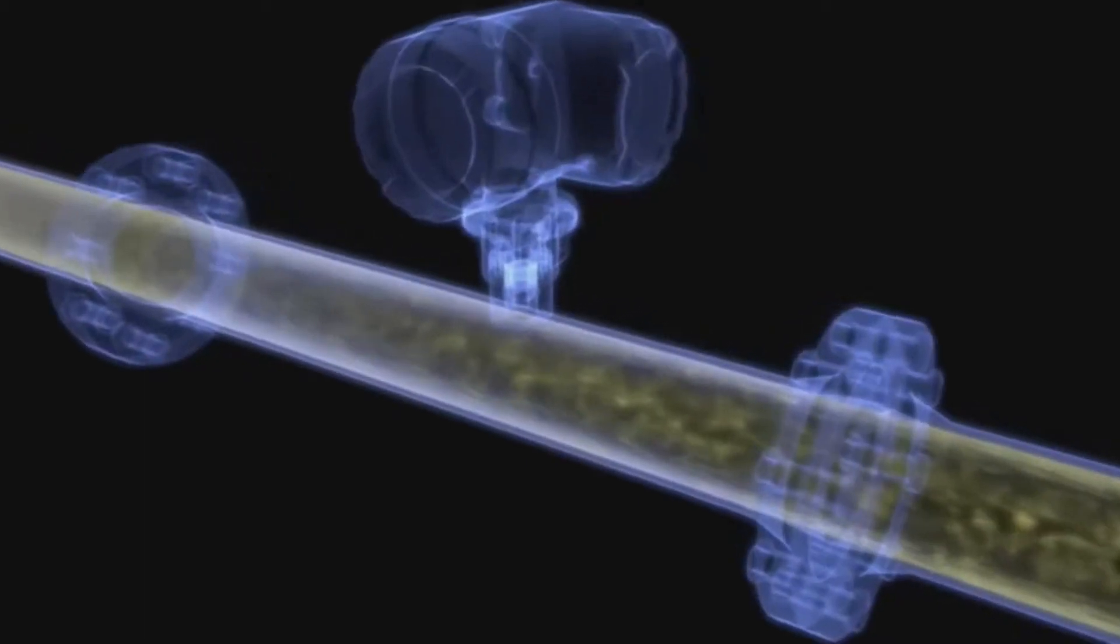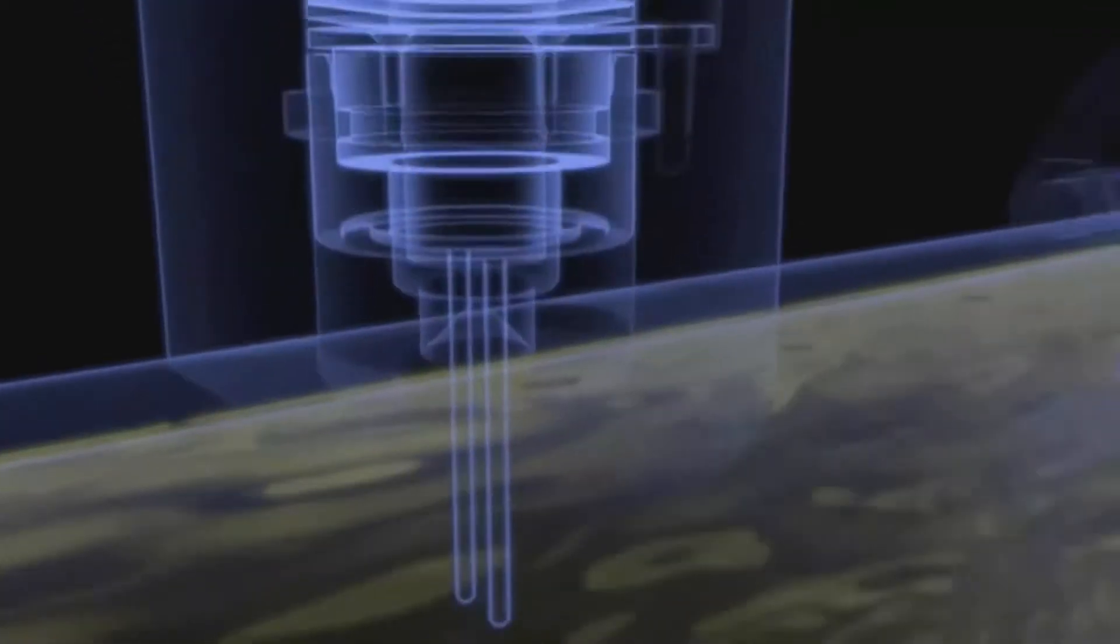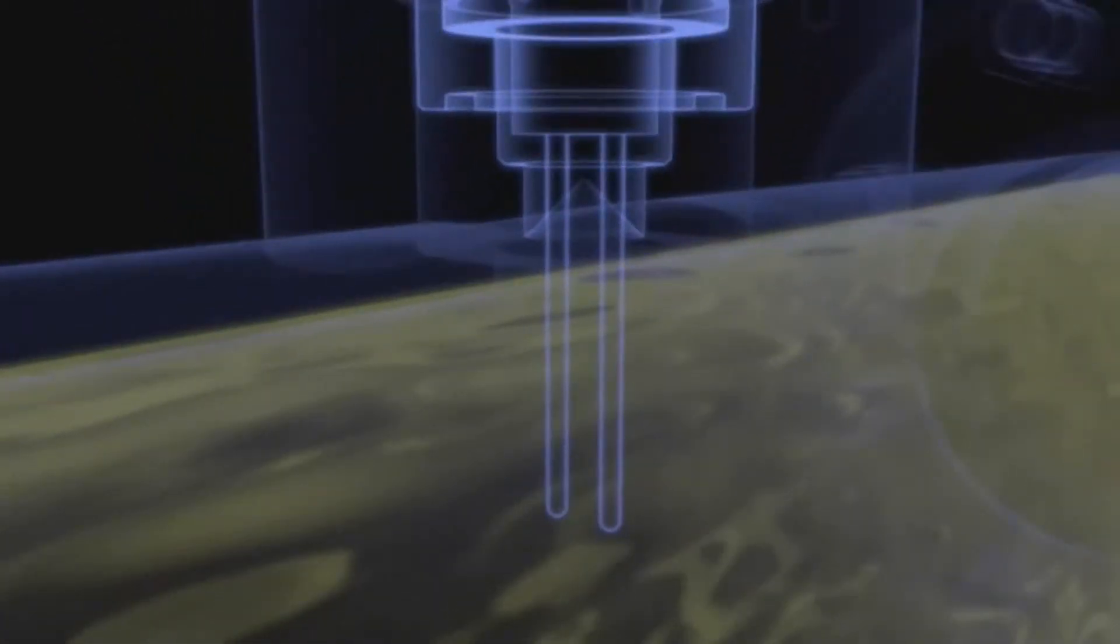Inside thermal flow meters are two temperature sensors protruding into the measuring tube. They're known as PT100 resistance thermometers.